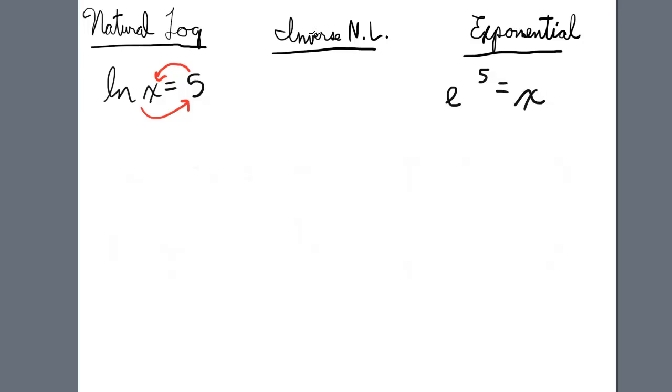Now introducing inverse natural log format, we're just going to reverse these numbers here. It's ln to the negative 1, that's the notation for inverse natural log, of 5 equals x. So going from natural log format to inverse natural log, we just change the order of the 5 and the x.